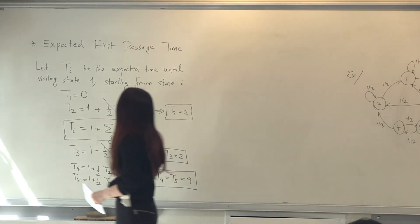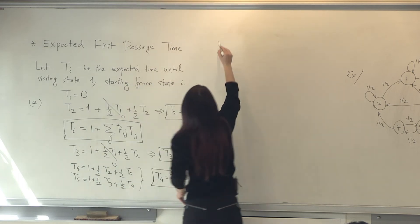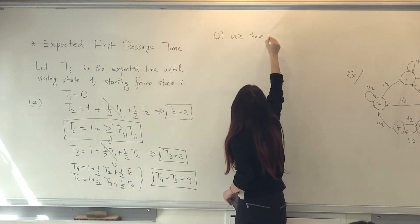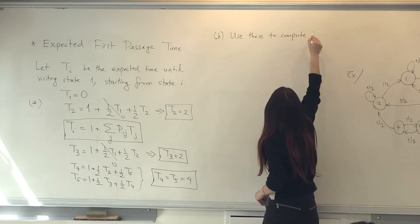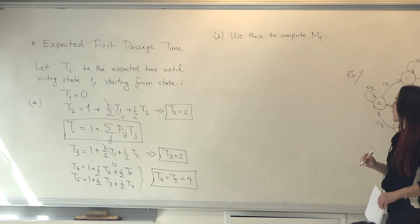So essentially, this was part A of the problem in your lecture notes. Part B says, use these to compute M1, the mean recurrence time for state 1.